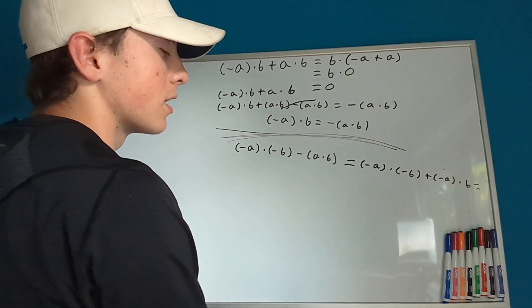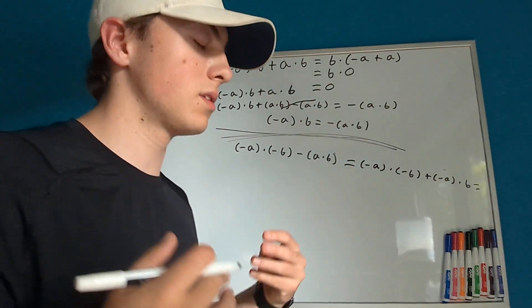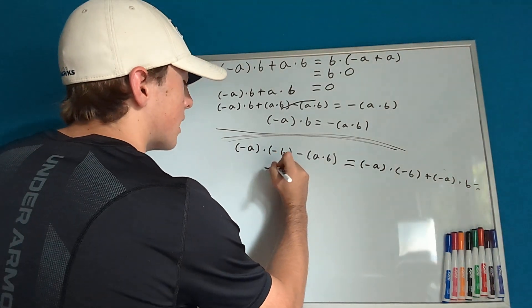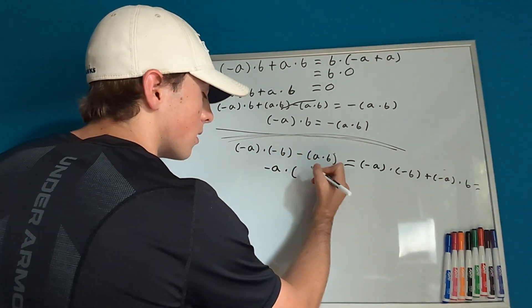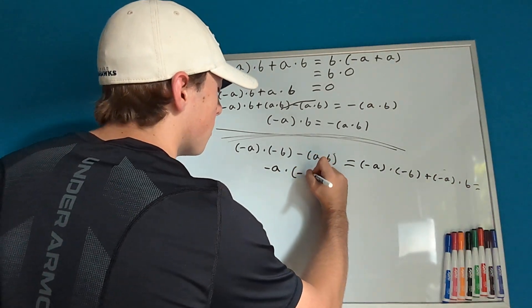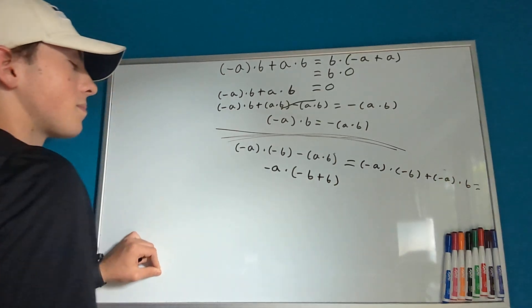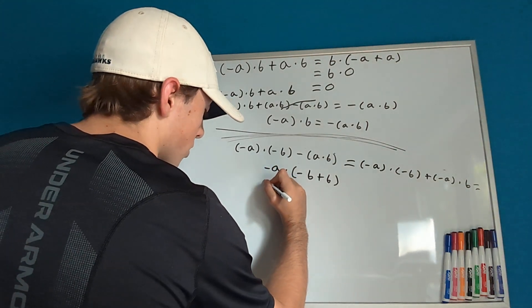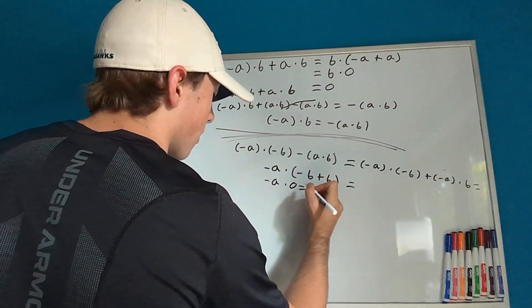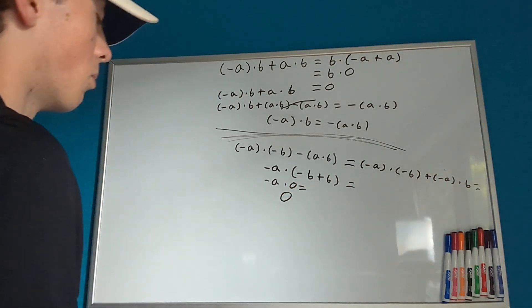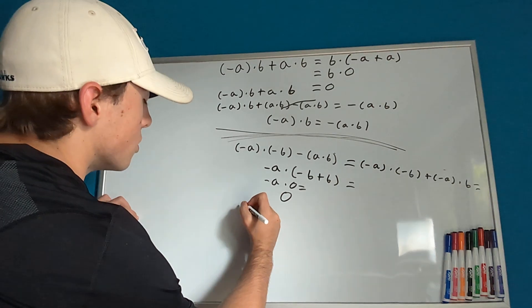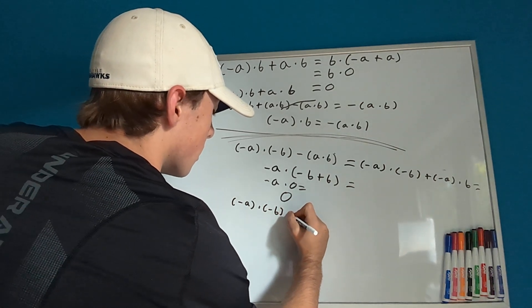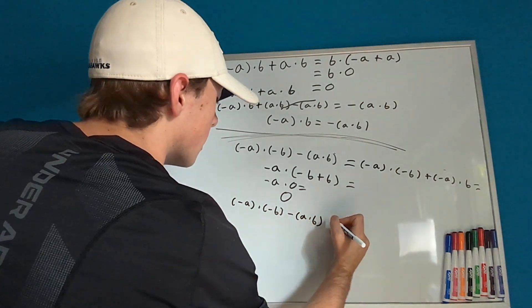What can we say this equals? We can factor out the negative a. So we can say that this equals negative a times negative b plus b. Negative b plus b equals zero for any number, so this becomes negative a times zero, which equals zero. So negative a times negative b minus a times b equals zero.